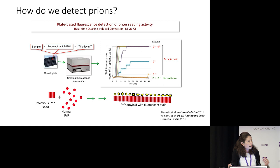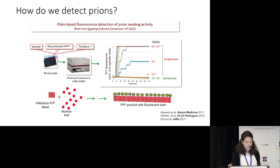The central theme of my grant looks at how these immune system mechanisms may deal with a prion infection in the body. But first, how do I detect prions in a laboratory environment? I use an assay known as the Real-Time Quaking Induced Conversion, or RT-QuIC assay.